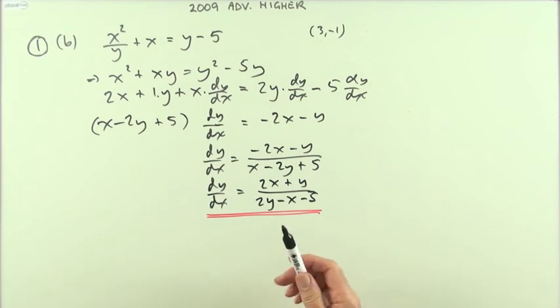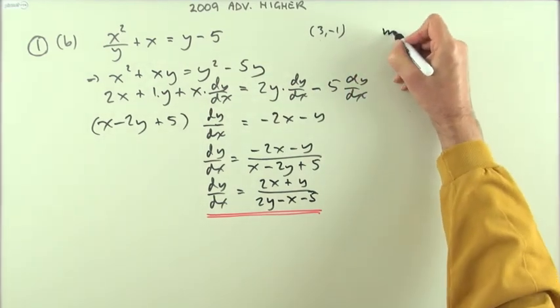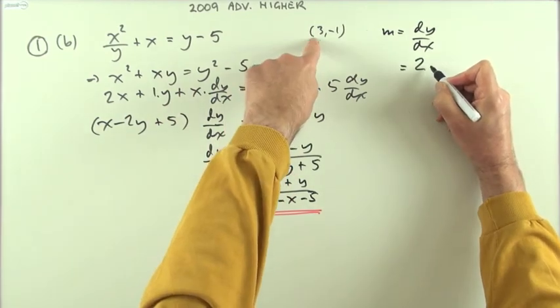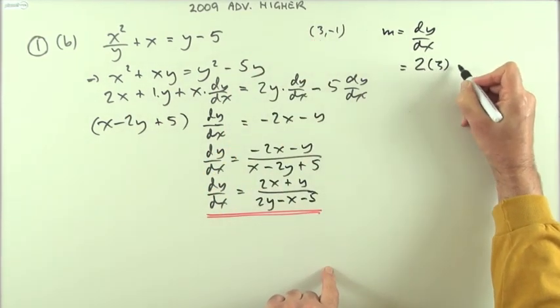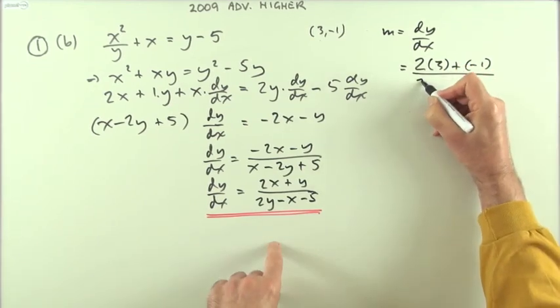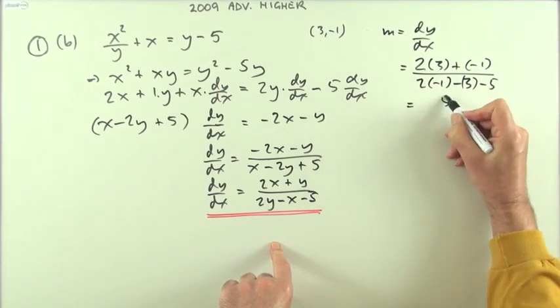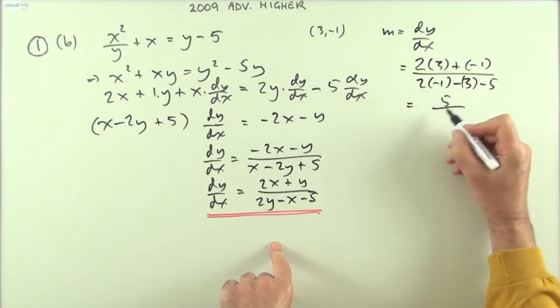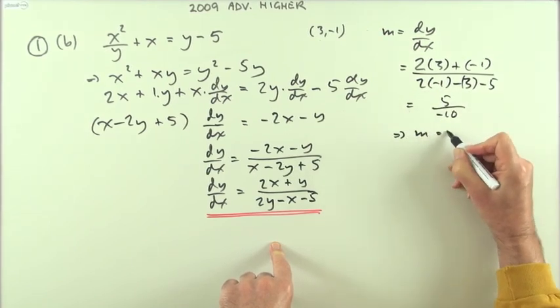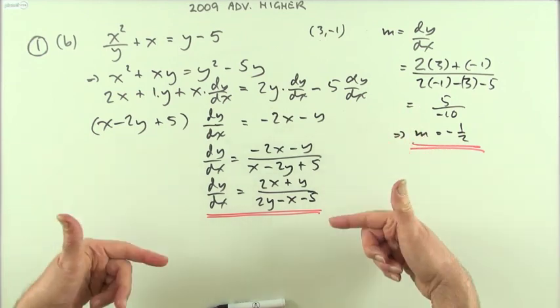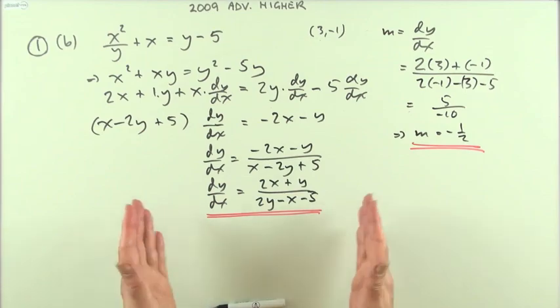Extra work and unnecessary in this case, because I just asked for the gradient. And then I could simply say, well, what happens at that point then? So since the gradient equals dy by dx, it's going to equal, at this point, 2 times 3 plus a negative 1 over 2 times negative 1 minus a 3 minus a 5, which is 5 over negative 2, negative 3, negative 5, negative 10, which means the gradient, as before, is negative a half. There, that would be the longer way that gives the satisfying neat result.